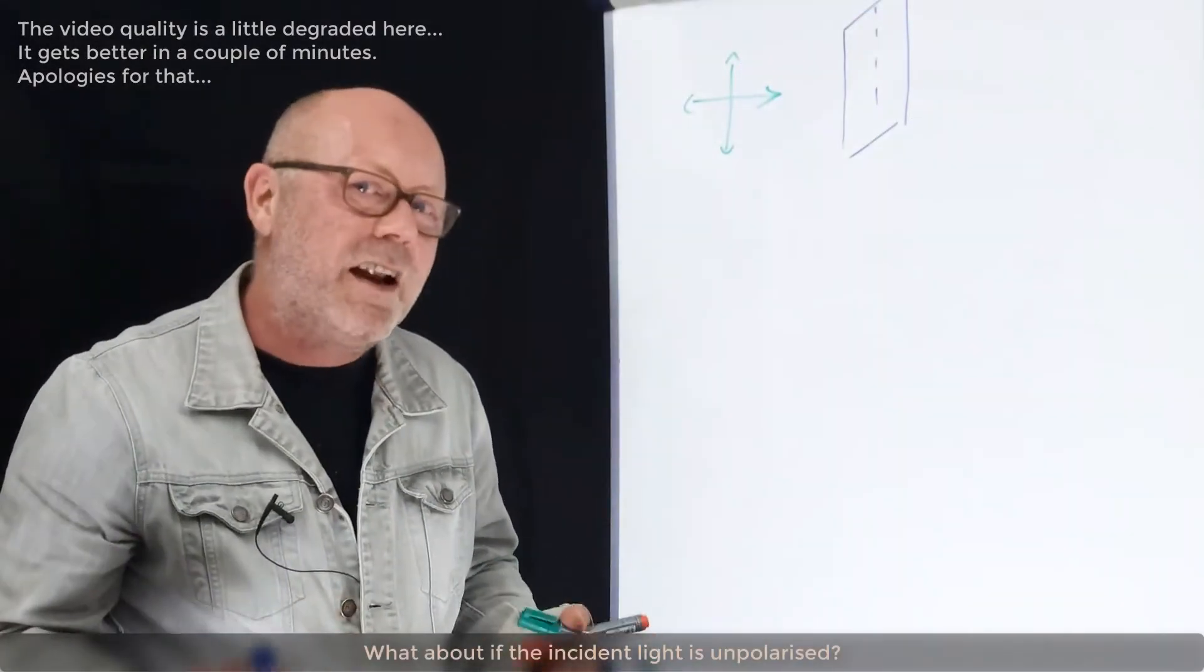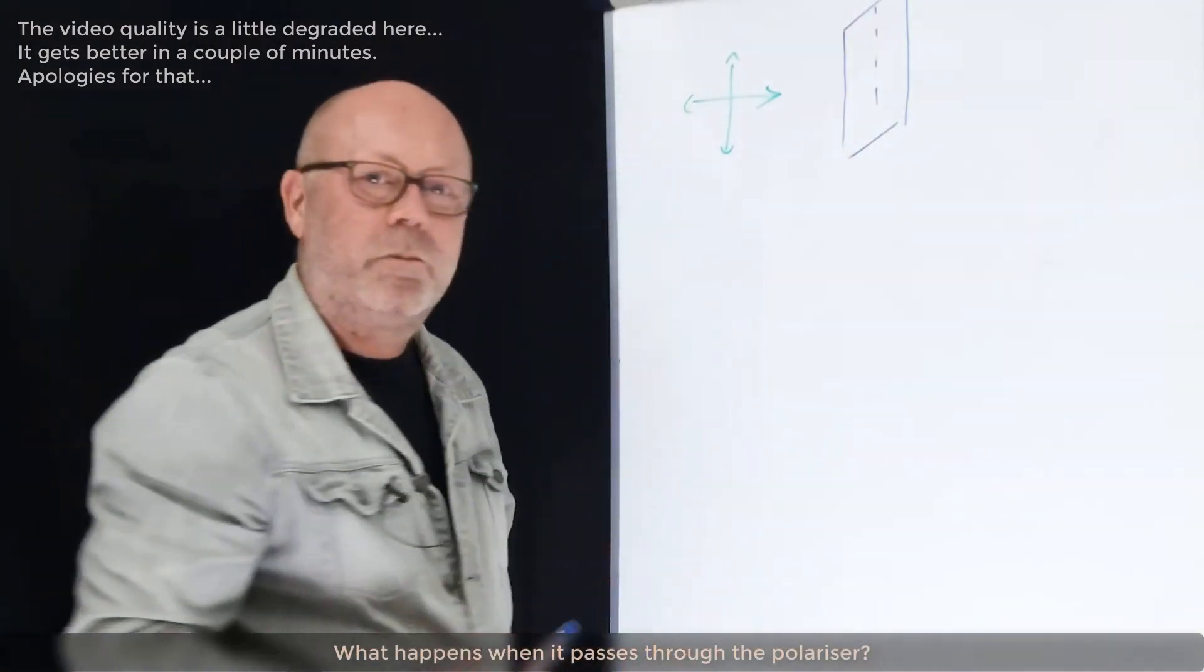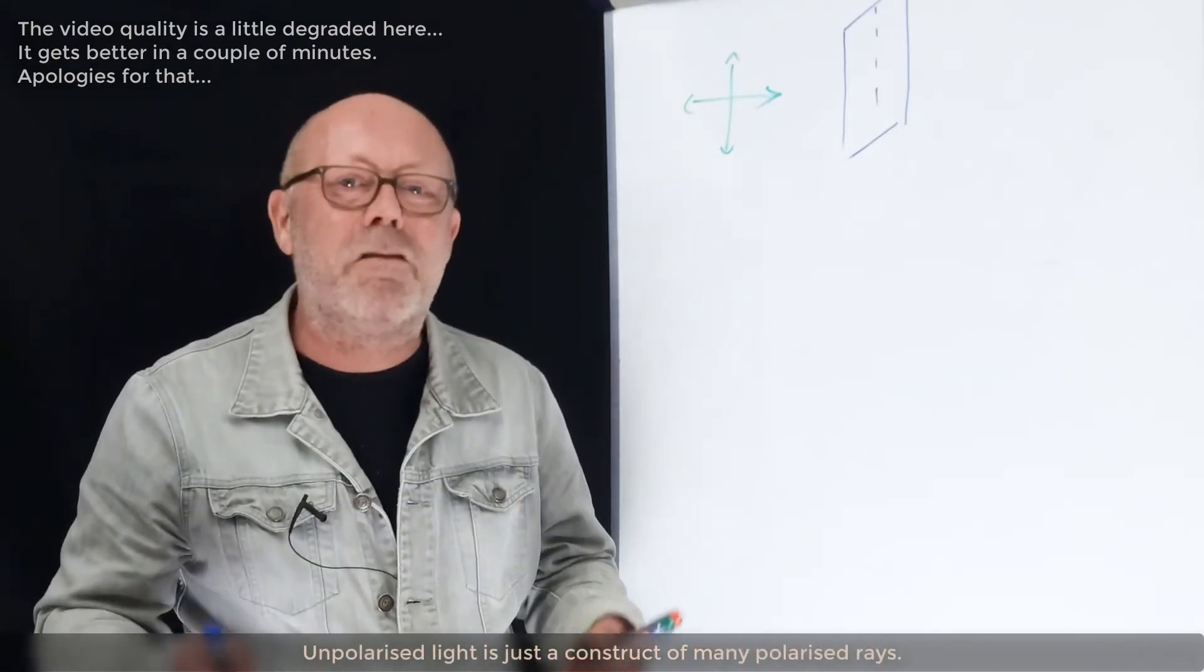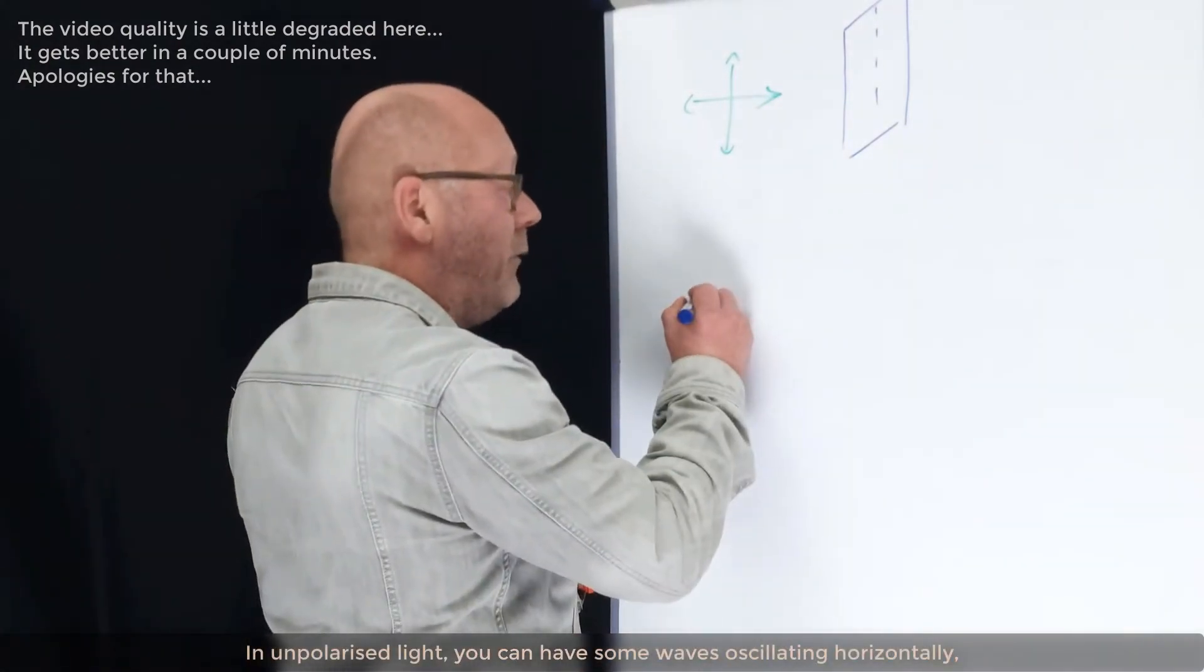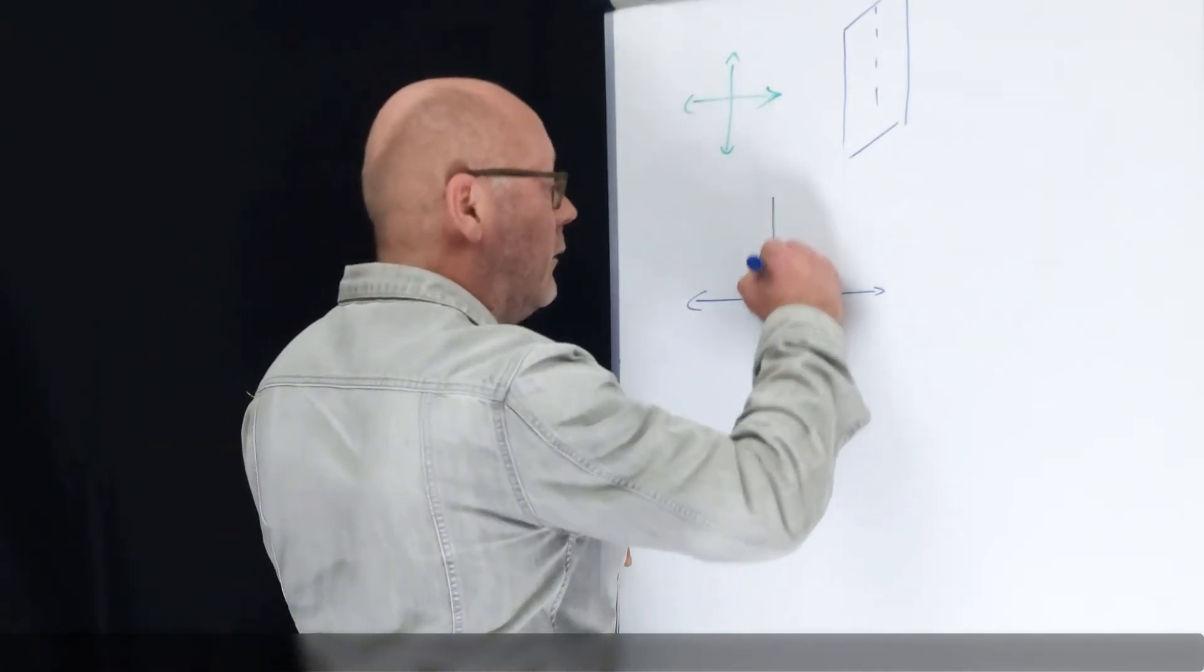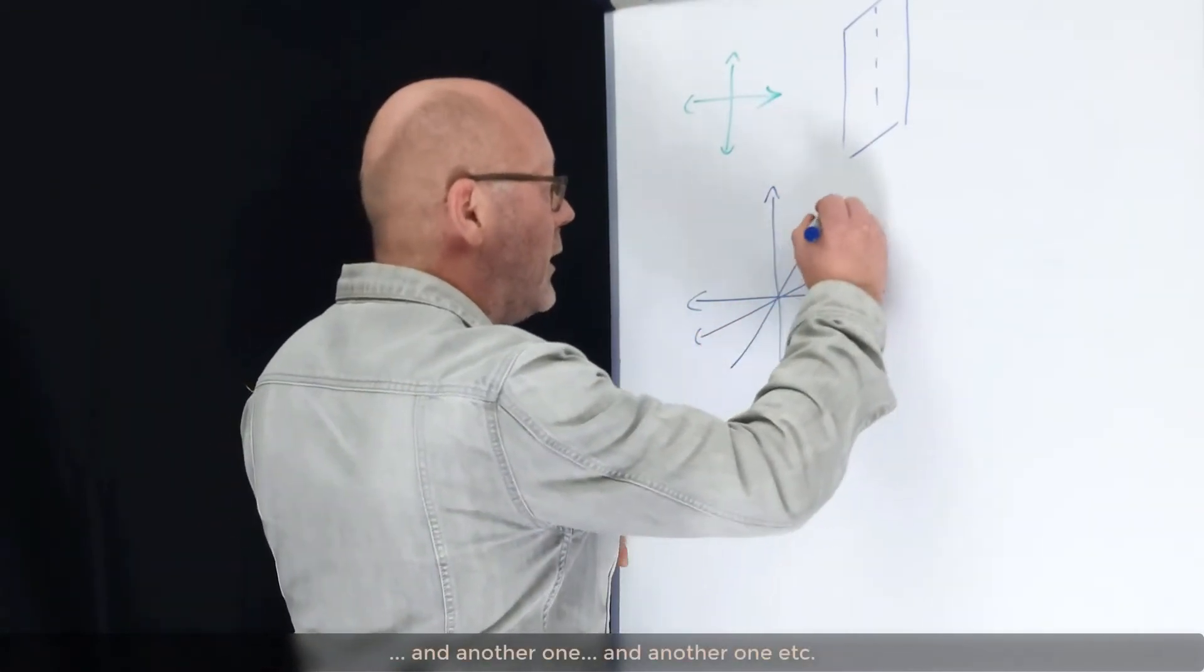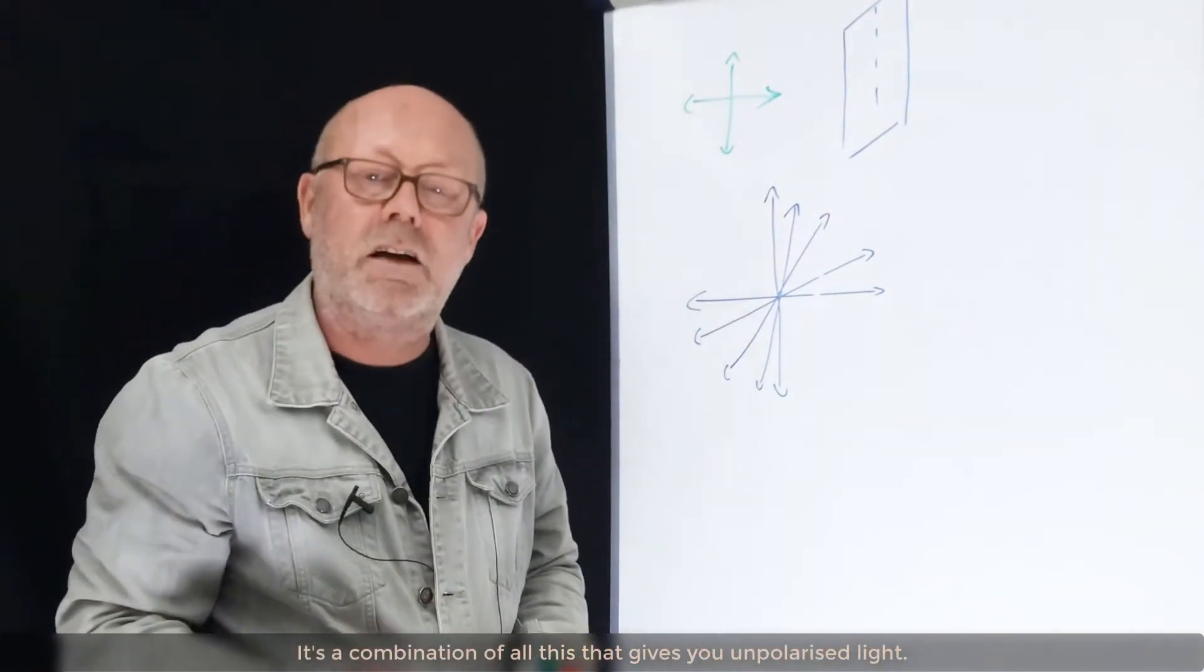What about if the incident light is unpolarized? What happens when it passes through the polarizer? For that, we should remember what is unpolarized light. Unpolarized light is just a construct of many polarized rays. In unpolarized light, you can have some waves which are oscillating horizontally, vertically, that add up to some which are oscillating with an angle, and another one, and another one, and it's a combination of all this that gives you unpolarized light.